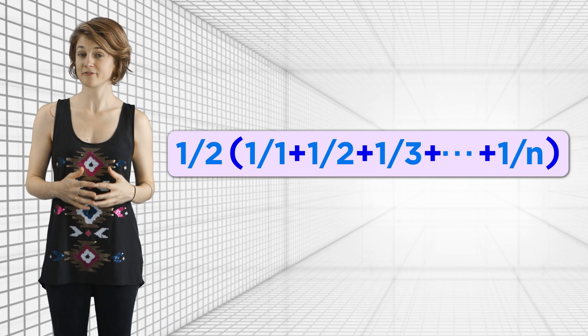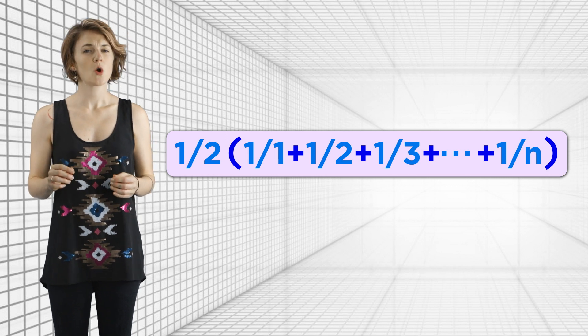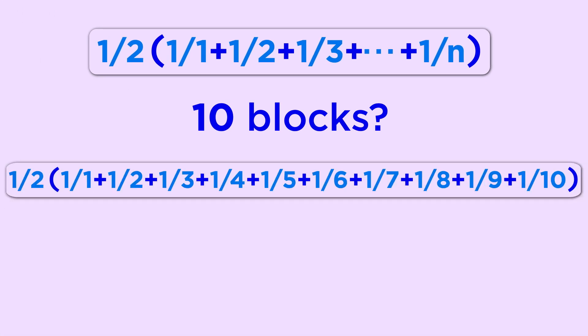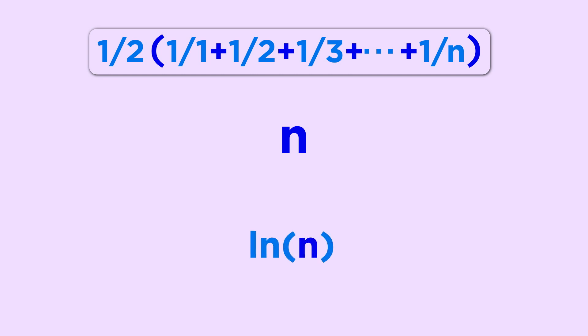Here's what's crazy about that. After we put down n blocks, we add up all their individual extensions to discover that the length the bridge will extend over the table is equal to ½ times (1 over 1 plus 1 over 2 plus 1 over 3, all the way up to 1 over n). So, what's the longest bridge you can build with 10 blocks? It's this sum, which is roughly 1.46 centimeters. What if you have 20 blocks? Then your bridge extends roughly 1.8 centimeters. Actually, for an arbitrary number n, the sum 1 plus ½ plus 1 third, all the way up to 1 over n, is pretty well approximated by the natural log of n.